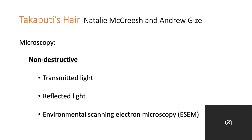If we do microscopy first of all, that's a non-destructive technique — we can examine something and return it untouched. First of all we've got transmitted light, then reflected light, and then environmental scanning electron microscopy. In transmitted light, the light is passed through the sample. In reflected light, the light is bounced off the sample. And electron microscopy uses an electron beam for surface characterization.